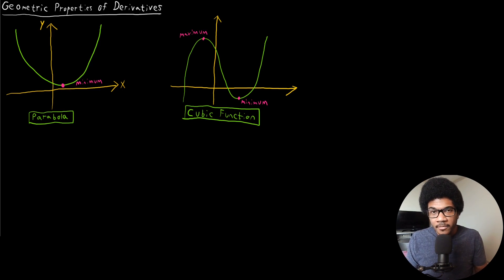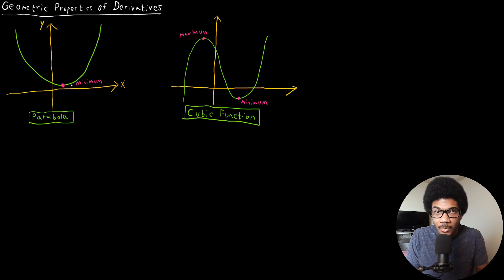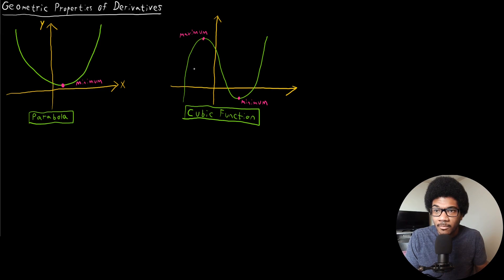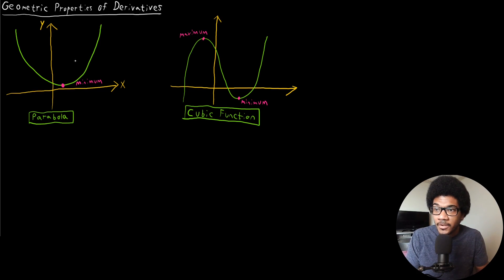The whole point of this video is: how can we use derivatives to tell us whether a function is increasing or decreasing, or has a maximum or minimum? It would be very tedious if every time we wanted to locate the minimum of a function we had to plot the entire thing, or if we wanted to know whether a function is increasing or decreasing we had to plot a bunch of points around the point we're interested in. Luckily, we can use the derivative to figure out this information.